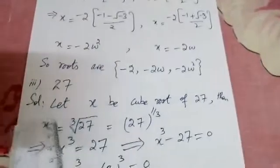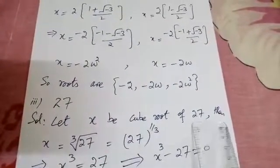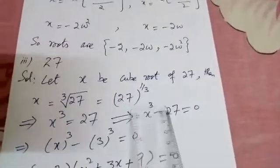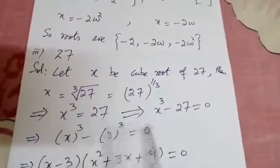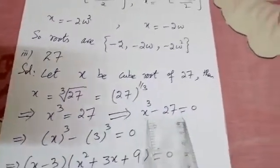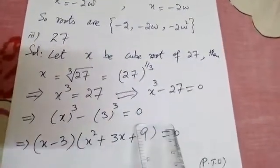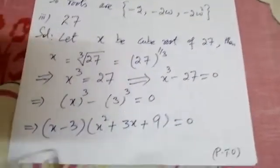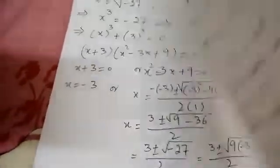To find the cube roots of 27, let X be the cube root of 27. Then X equals the cube root of 27, that is 27 to the power 1/3, which implies X³ equals 27, that implies X³ minus 27 equals 0. It can be written as X³ minus 3³ equals 0, and now it is of the form a³ minus b³. Using that formula it becomes (X minus 3)(X² plus 3X plus 9) equals 0.